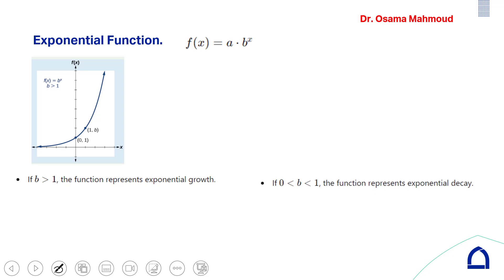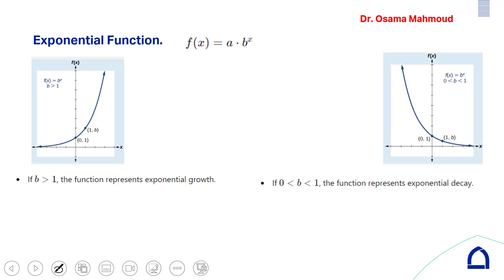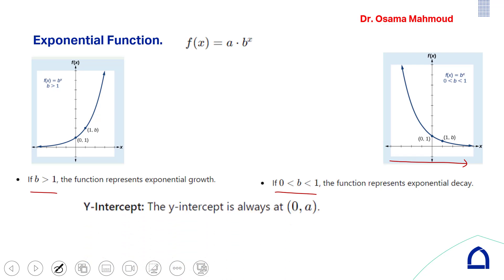If the base is between 0 and 1, the function is called exponential decay. When b is greater than 1, the function increases from left to right. When b is between 0 and 1, the function decreases from left to right.